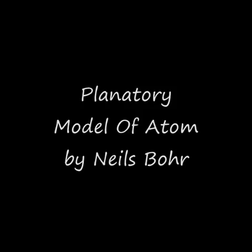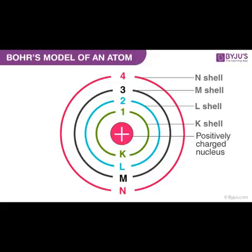Danish physicist Niels Bohr proposed a planetary model of atomic structure in 1913. He stated that electrons revolve around the nucleus, which is positively charged, just as planets orbit the sun. This means that just as Earth, Mars, Jupiter, Venus, and other planets revolve around the sun in the solar system, electrons orbit around the nucleus, and all of them possess constant energy.